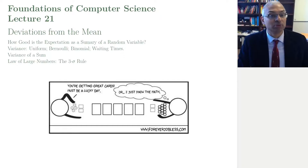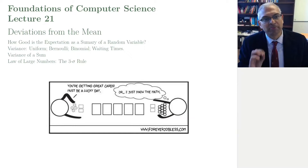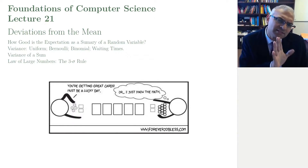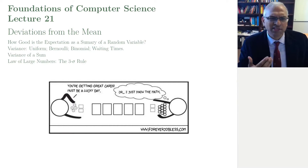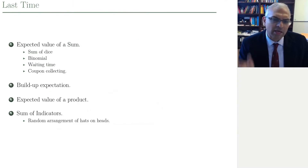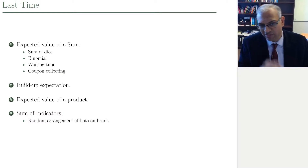Hi there, welcome to lecture 21 of FOX. We're going to be talking about deviations from the mean, or how good is the mean at summarizing the outcome of an experiment with respect to the quantity — the measurement that we are interested in, which we call the random variable. Last time we talked about computing expected values, specifically the expected value of a sum.